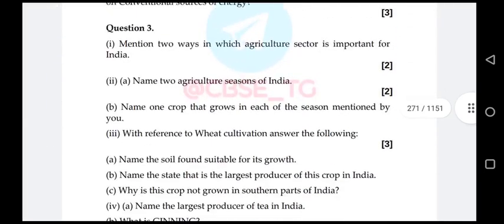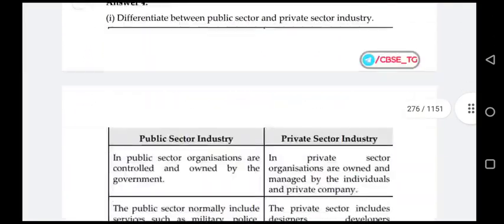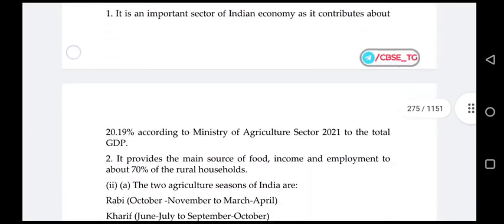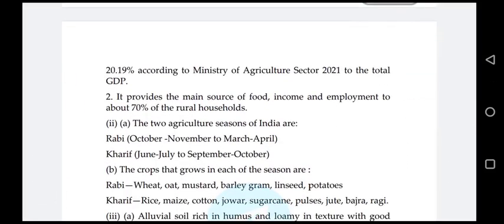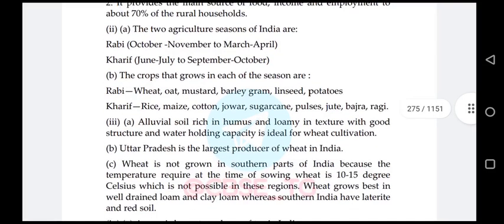Question three, sub-question two: name any two agriculture seasons of India and one crop grown in each. The two main seasons are Rabi (October–November to March–April) and Kharif (June–July to September–October). Rabi crops include wheat, oat, mustard, barley, gram, linseed, and potatoes. Kharif crops include rice, maize, cotton, jowar, sugarcane, pulses, jute, bajra, and ragi.